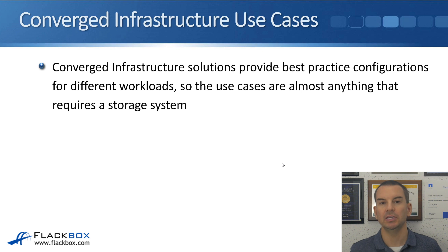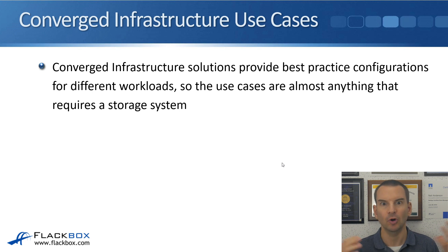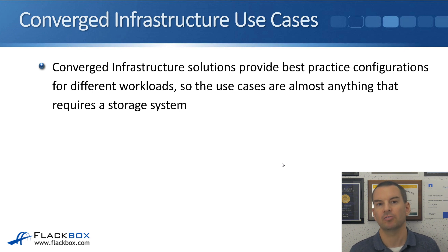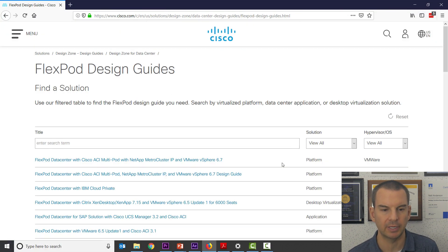The use cases for converged infrastructure — there are best practice configurations for loads of different workloads. So the use cases cover pretty much anything that you would require storage for. I'll show you those design guides now, so let's have a look on the Cisco.com website.